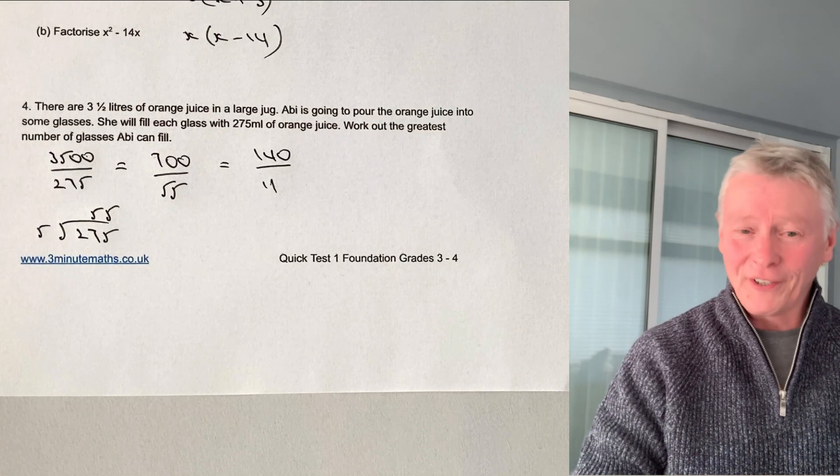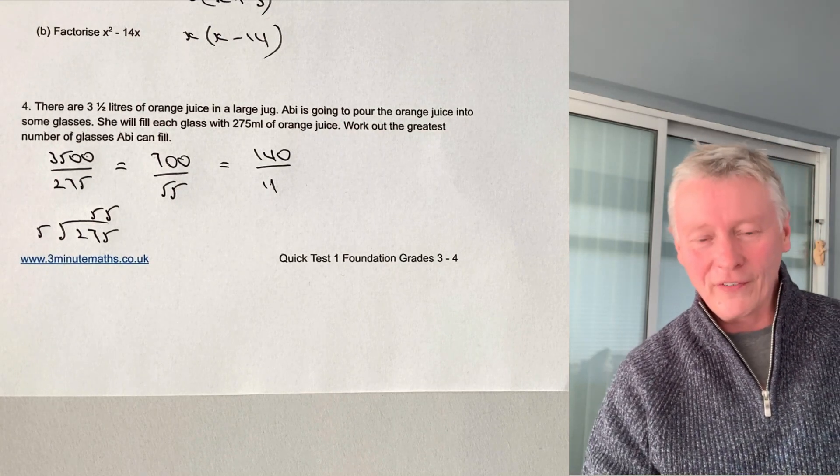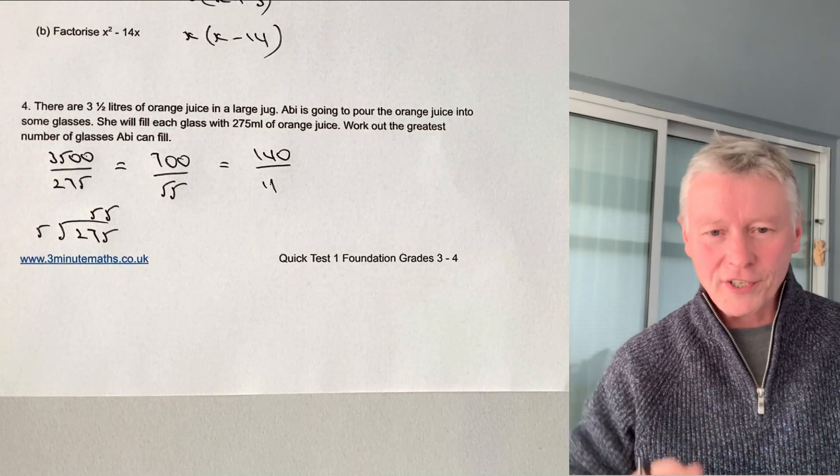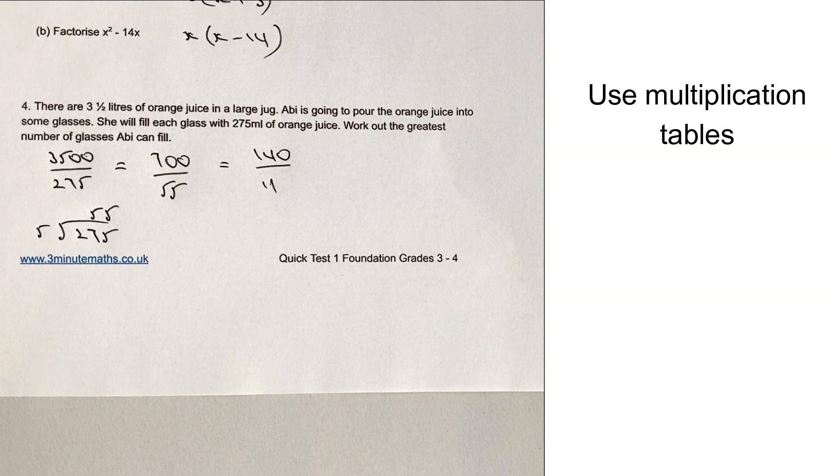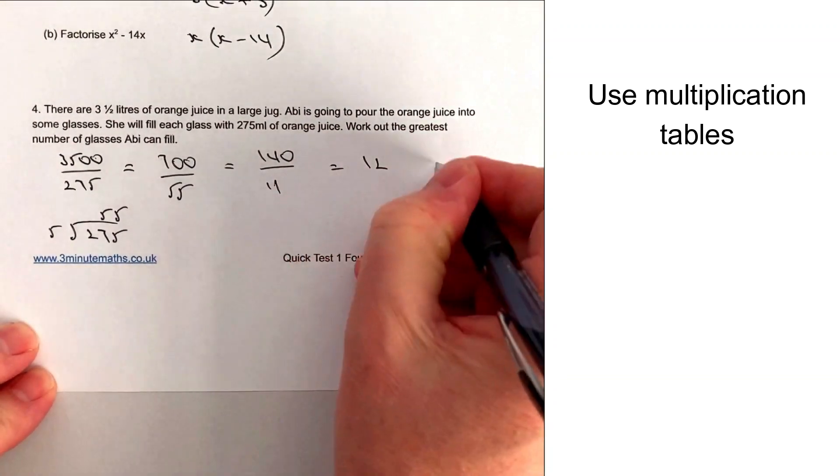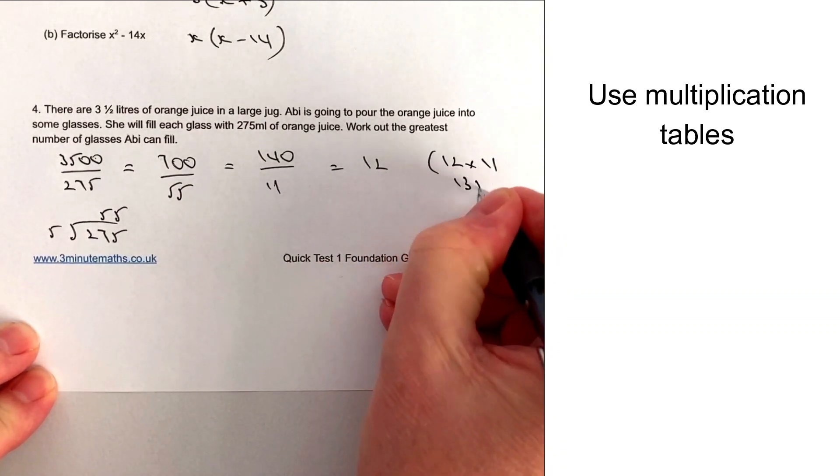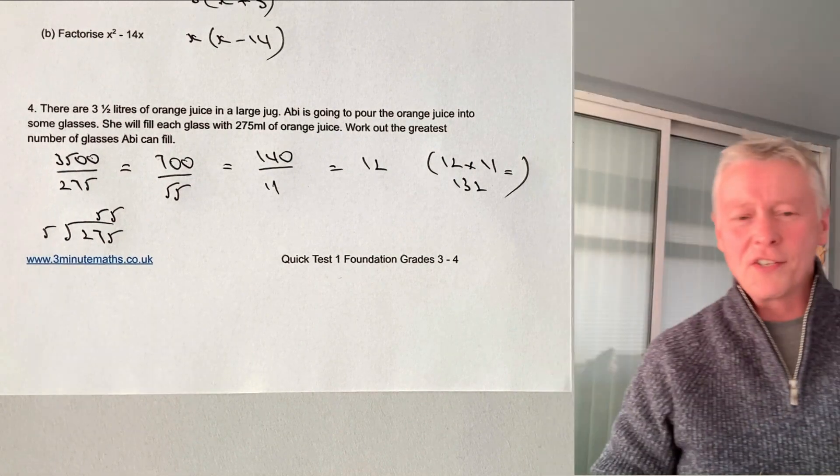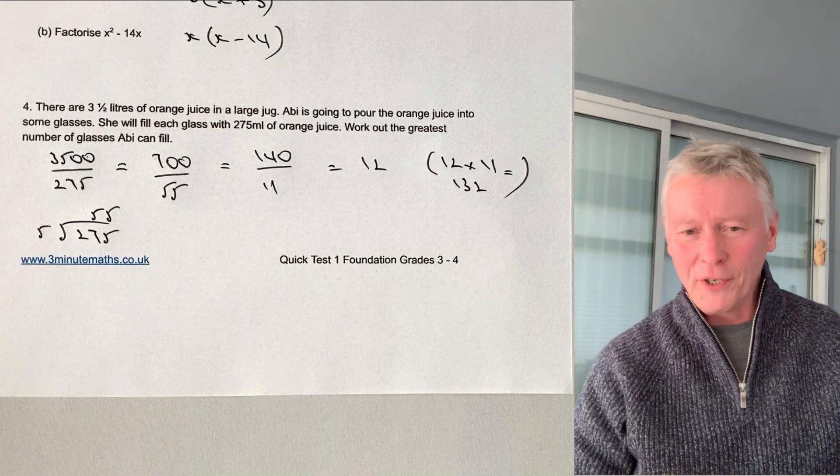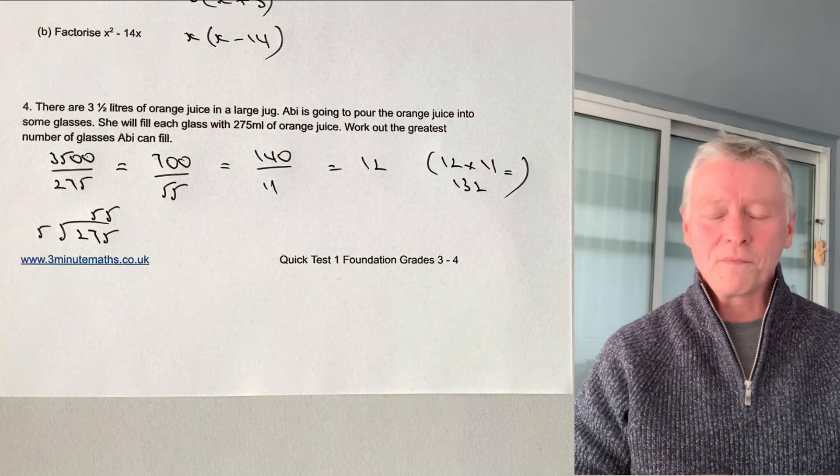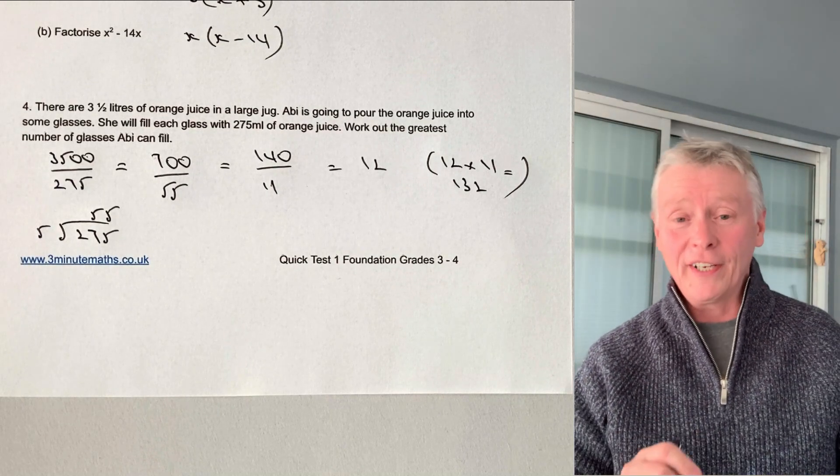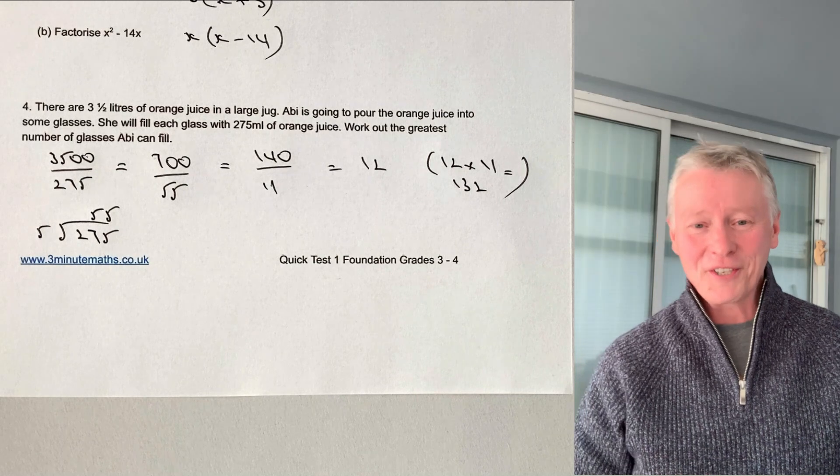Now, what I'm going to do is I need to know how many glasses she can pour. So basically, I need to know how many lots of 11 there are in 140. Well, I know that 12 is going to be 12 times 11, which is 132. So actually, the amount of glasses that she can pour is going to be 12 glasses. And it's kind of easier to do that maybe than it is by doing some sort of long division. Remember, we're not after accuracy of this. We're just after finding out how many glasses she can actually pour.